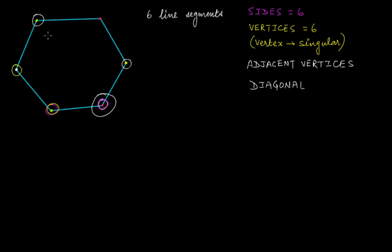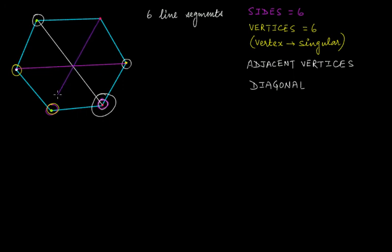So if I connect these two non-adjacent vertices, this is a diagonal. Similarly, if I connect these two vertices that are not adjacent, that is also a diagonal. If I connect these two vertices, that will also be a diagonal. The condition for any line to be a diagonal is that it must connect two vertices and those two vertices must not be adjacent.